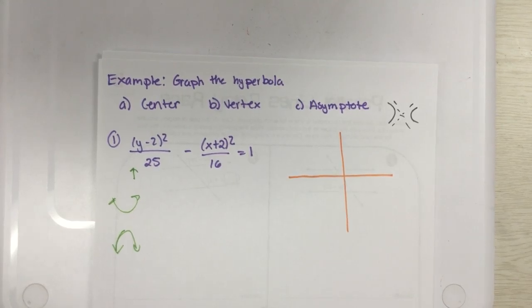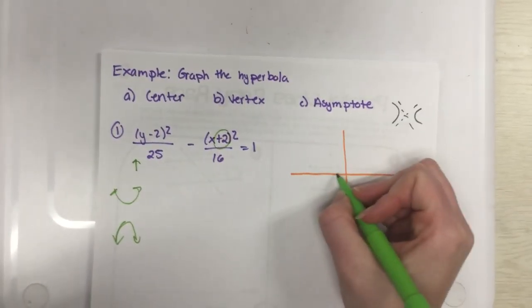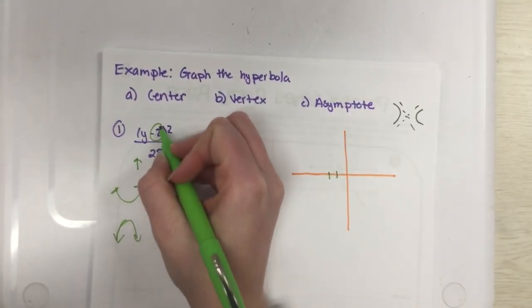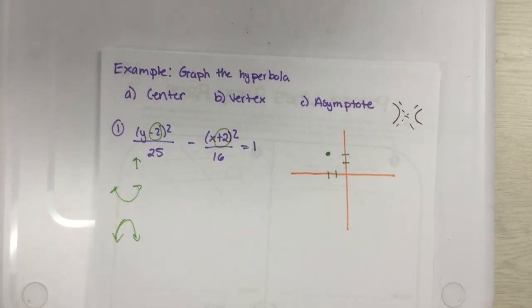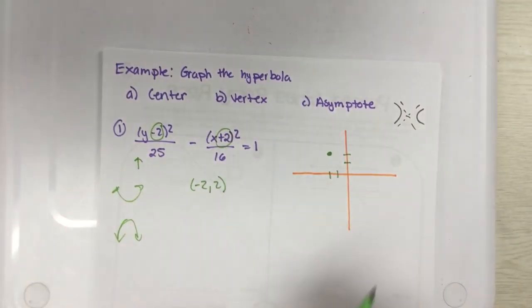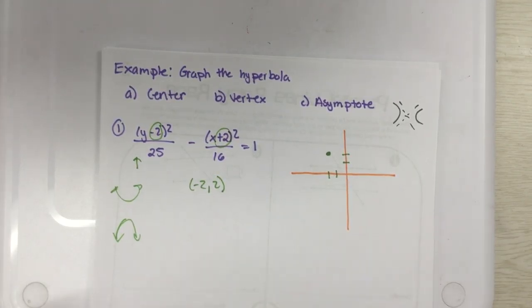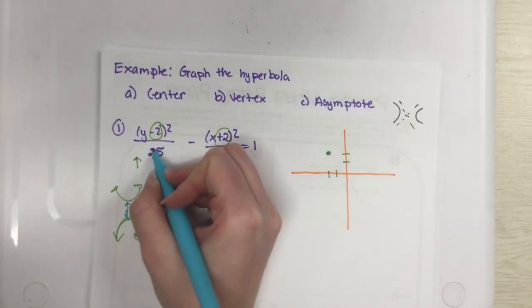We're going to start with our center here. Be careful if you're looking at this: y is up front so that means y is first, so this is actually going to be an up-down parabola. Y is up so it's going to be up-down. Our center is going to start with a negative 2 and it'd go up 2, so there's my center. Back 2, up 2. Make sure your x is first and your y is second.